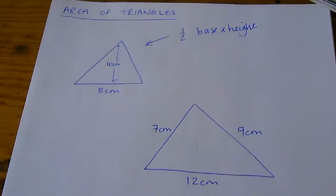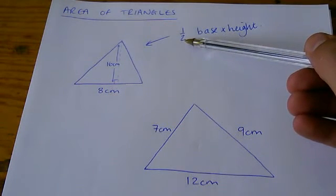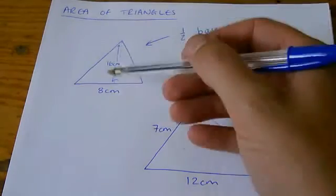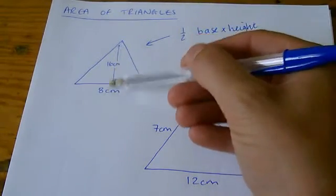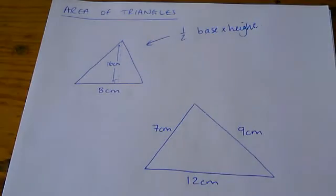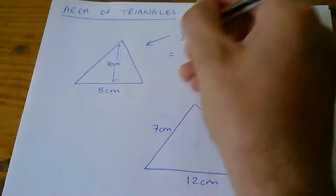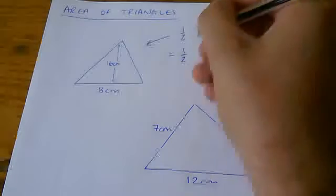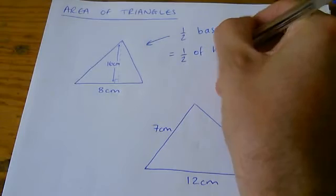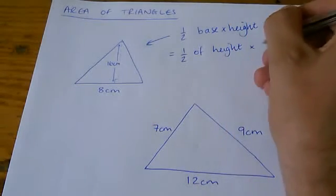So, this is really about choosing when you're going to do this halving. You can do the base times height and then half it, but because these are larger numbers, that might be a bit horrible. Or, you can half one of them beforehand and make your job a bit easier. I'm going to do that. I'm going to do half of the height times the base.